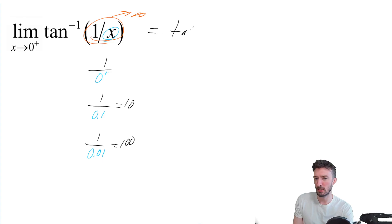So I kind of just have to figure out what's happening when I have tan inverse of infinity. But what that really means is that I have the limit as x goes towards infinity of tan inverse of x.